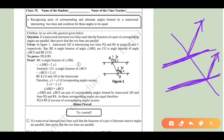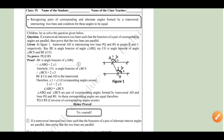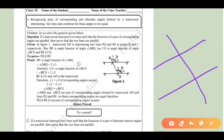Given: transversal AD intersects lines PQ and RS at points B and C. The bisectors BE and CF are the bisectors of the corresponding angles. Now let's work through this step by step.